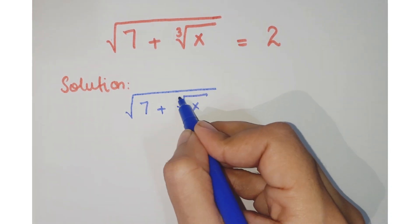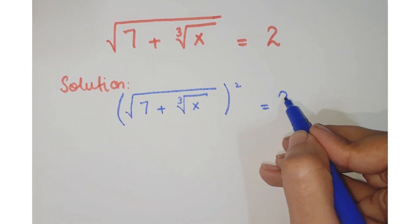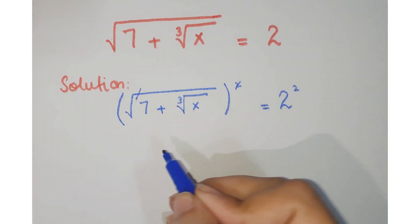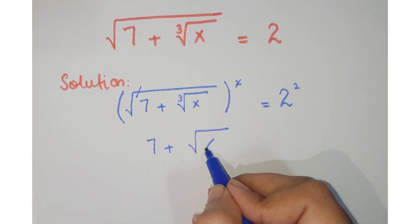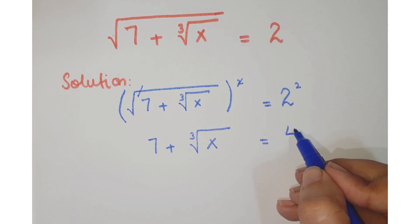Let's see how we proceed in this question. Just apply squaring both sides. So this square root and this square are cancelled. So you have 7 plus cube root of x equals the square of 2, which is 4.